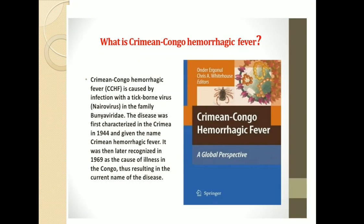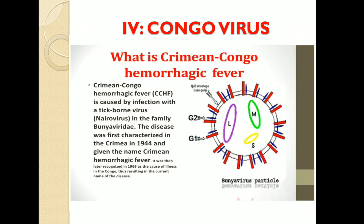Coming towards the last hemorrhagic fever virus — Crimean Congo hemorrhagic fever (CCHF). It is caused by a tick-borne virus in the family Bunyaviridae. The disease was first characterized in Crimea in 1944 and given the name Crimean hemorrhagic fever. It was later recognized in 1969 as the cause of illness in Congo, resulting in the current name. CCHF is caused by infection with Nairovirus in the family Bunyaviridae.